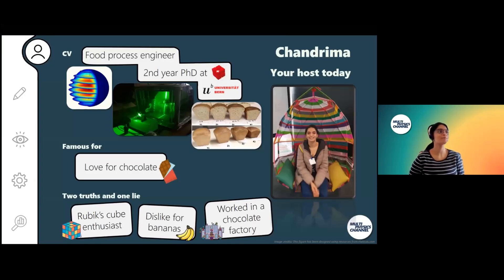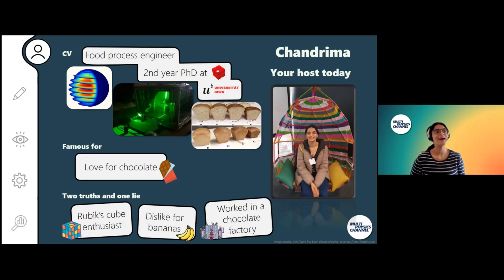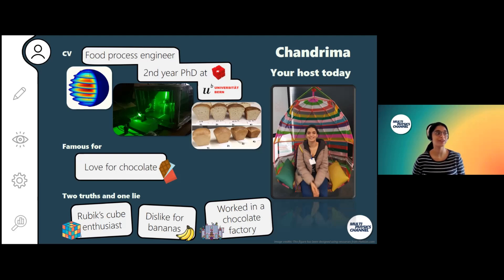Before I start, a little bit about me. My name is Chantreema, I'm a food process engineer in the second year of my PhD at Empa. My background is in making physics-driven digital twins of fruits, but previously also flow visualizations for optimizing baking ovens and baking protein-rich bread.